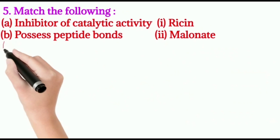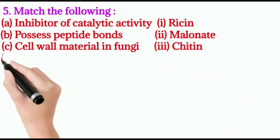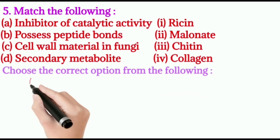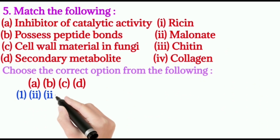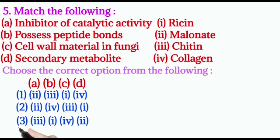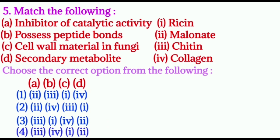Question number five: match the following — inhibitor of catalytic activity, possesses peptide bonds, cell wall material in fungi, secondary metabolites. Matching: inhibitor of catalytic activity is malonate; possesses peptide bonds is collagen; cell wall material in fungi is chitin; secondary metabolite is resin. The right option is 2.